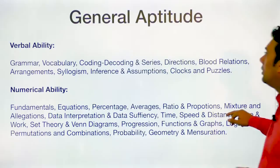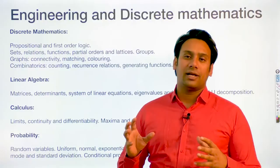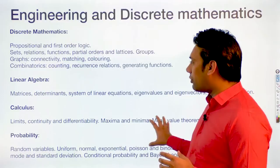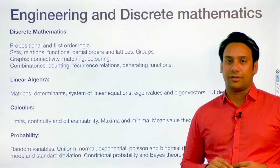Then you have Engineering and Discrete Mathematics. In other branches like mechanical, civil, electronics and communication, the mathematical portion is quite huge because they ask engineering mathematics — a lot of topics are there. But here in computer science, we do not really have a lot of topics in engineering mathematics. Only three topics are there: linear algebra, calculus, and probability. And the rest of the topics here are from discrete mathematics. Discrete mathematics is only in the computer science discipline — it is not in other branches.